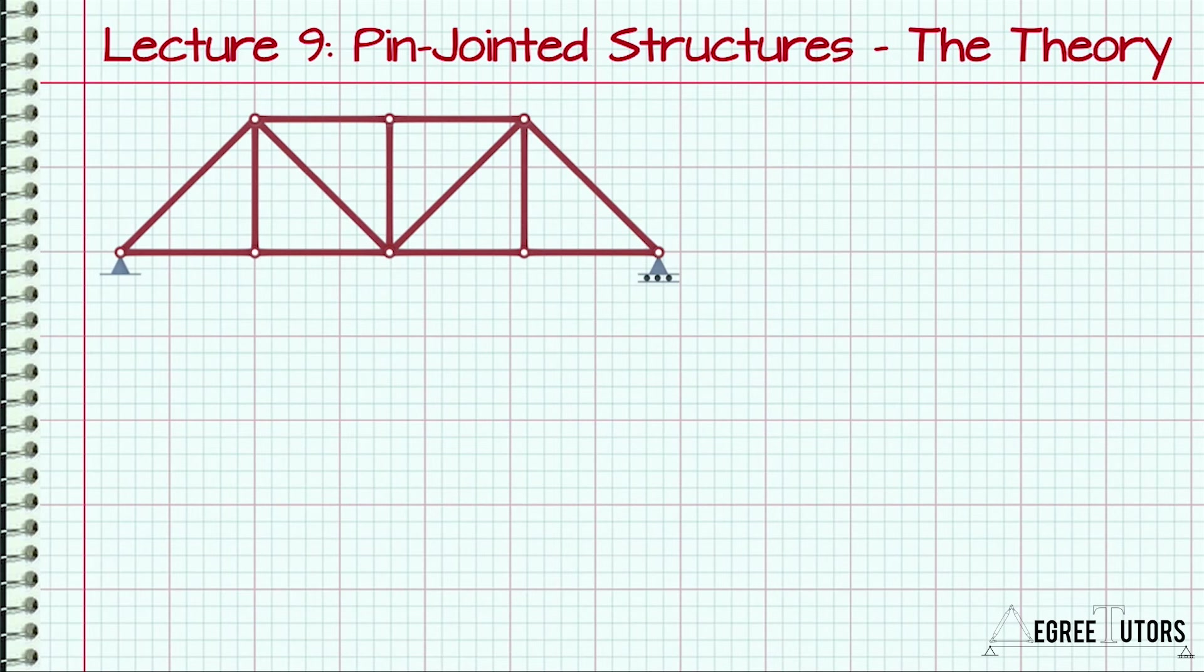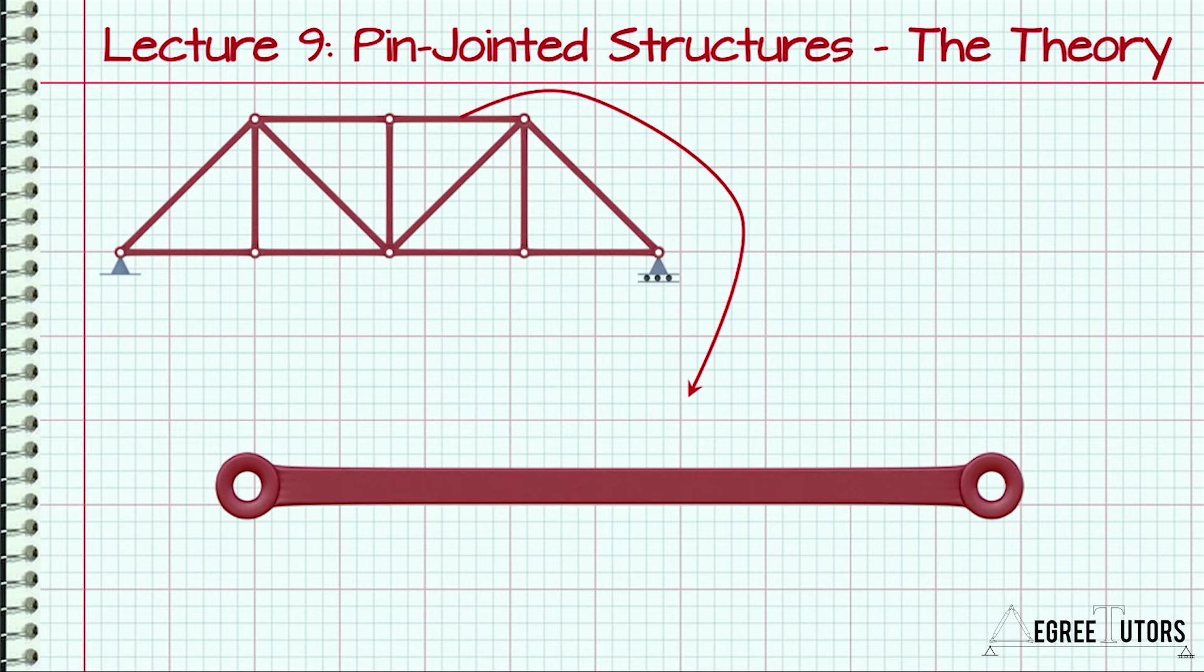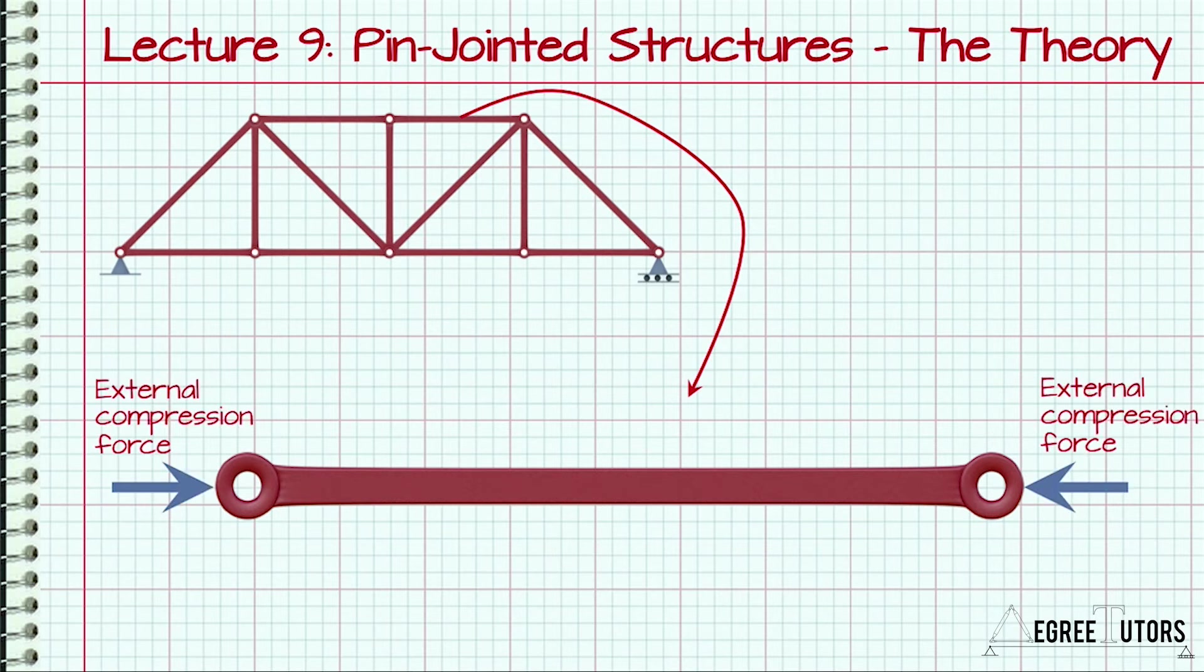Let's think for a minute about what's happening in the individual elements within a truss structure. Consider a single member of a truss that's subject to a force applied at each end. In this case, let's assume a compression force applied in line with the longitudinal axis of the member. For short, we'll call this an axial compression force.